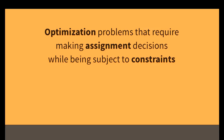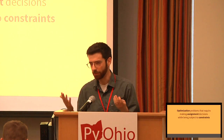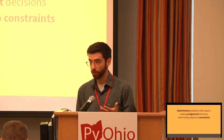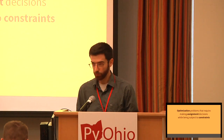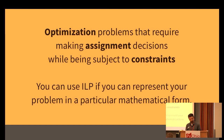The thing that all these problems have in common is that, broadly speaking, they are optimization problems that require making assignment decisions while being subject to constraints. You're assigning employees to shifts or vehicles to routes, there are constraints around which assignments you may or may not make, and you have some optimization you're trying to do — a definition of what's a good assignment versus a bad assignment — and you want the best possible assignment according to some metric. These are the kinds of problems that ILP is good for, but of course there's a catch: you can only use ILP if you can represent your problem in a particular mathematical form.